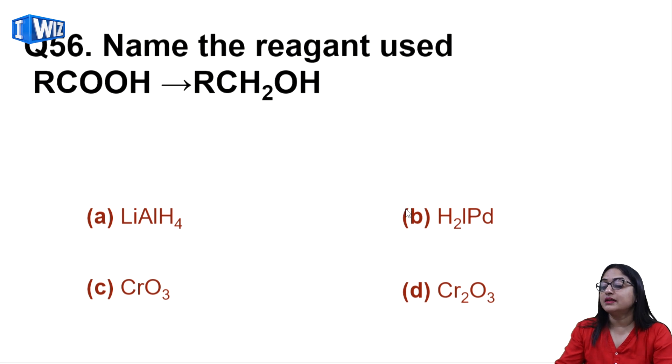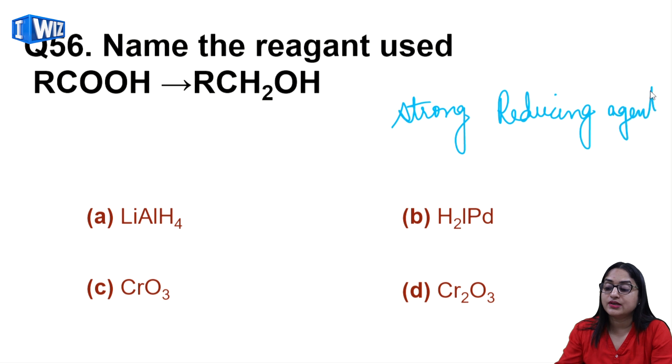Then if you have to make alcohol directly from acid, you need a strong reducing agent. Among all of these, the strongest reducing agent is lithium aluminum hydride, so A is the correct answer.